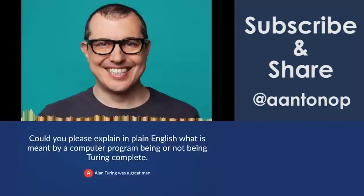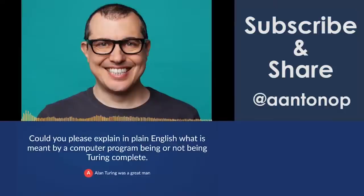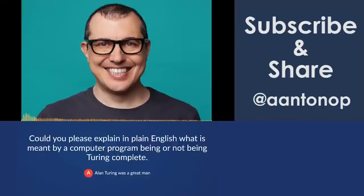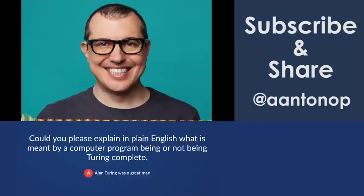Turing complete systems can express any possible program and they're very flexible, but we never know if they're going to finish running. That's why when you have a blockchain that operates a Turing complete system, you need a way to meter the time and resources it uses so that it doesn't run forever. For example, a program in the Ethereum virtual machine can run forever, so there's a mechanism called gas, which puts an upper limit on how much computation you consume when running an Ethereum smart contract.